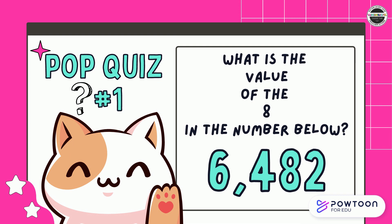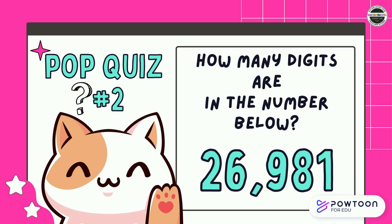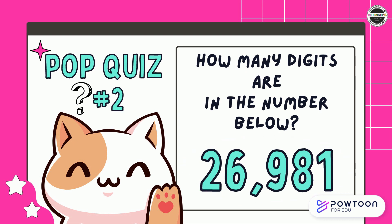Pop quiz! Question number one — what is the value of the eight in the number below? Did you say eight tens? That's correct. Question number two — how many digits are in the number below? Did you say five? That's right.